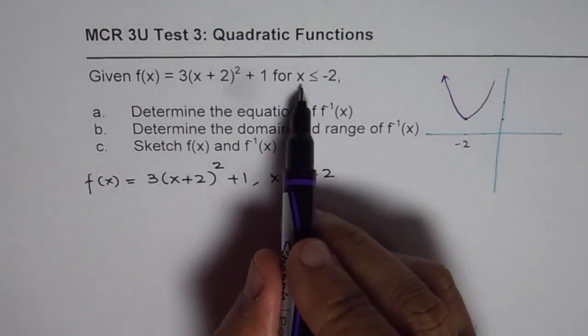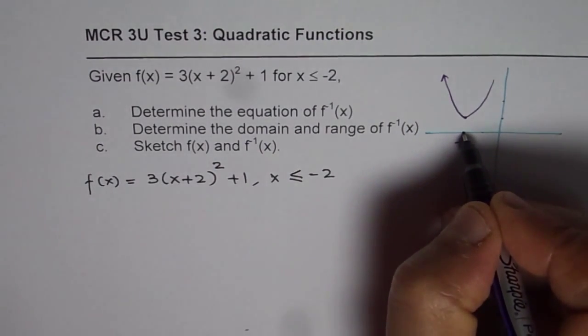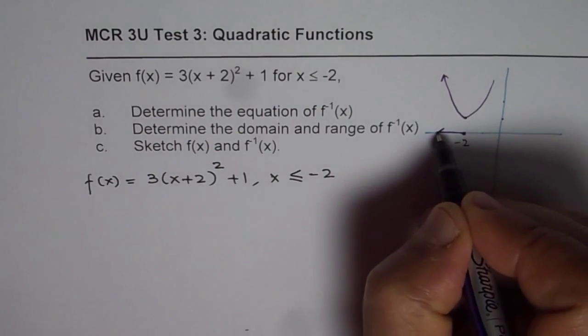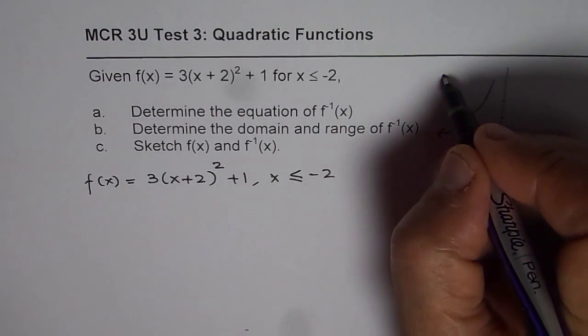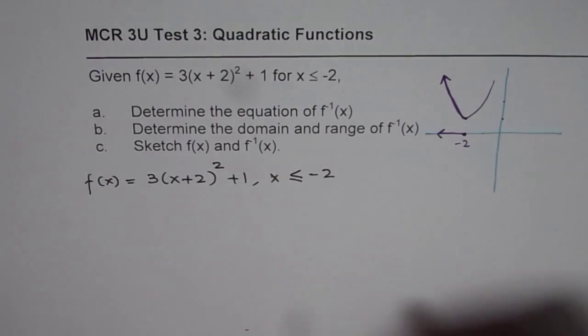Now, we are saying that the domain is less than minus 2. That means it is actually from here on the left side. So that is the domain. We have to consider this part of the graph only, not the right half of the part.